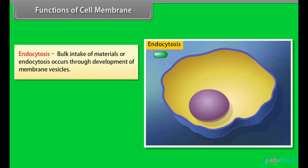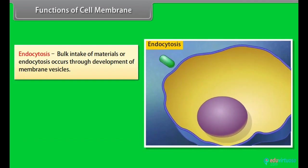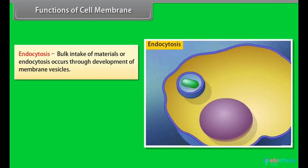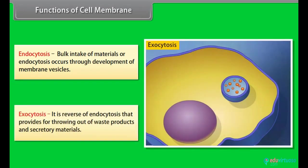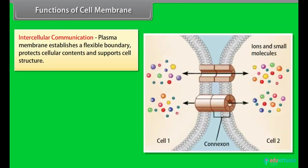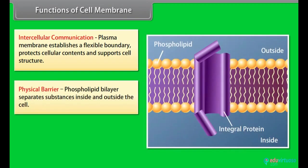Endocytosis - bulk intake of materials or endocytosis occurs through development of membrane vesicles. Exocytosis - it is reverse of endocytosis that provides for throwing out of waste products and secretory materials. Intercellular communication - plasma membrane establishes a flexible boundary, protects cellular contents and supports cell structure.